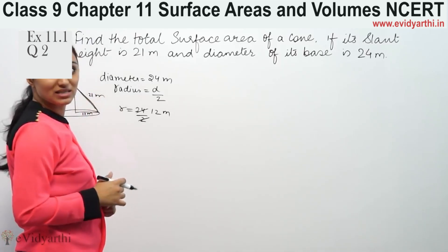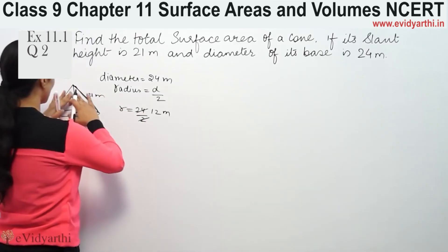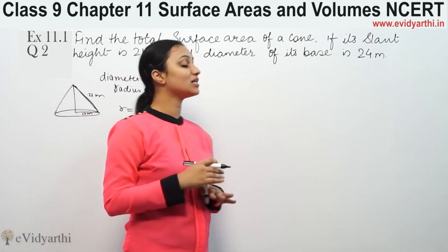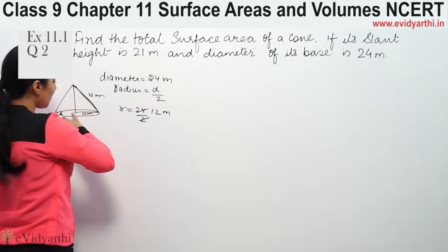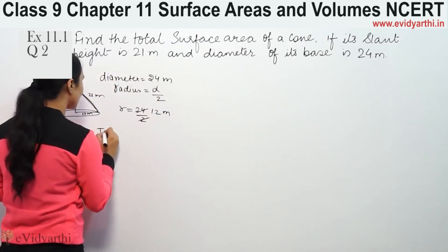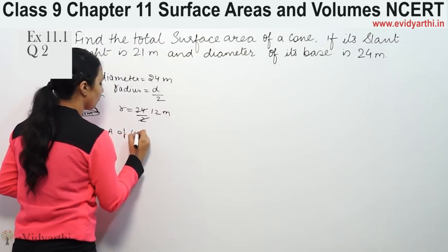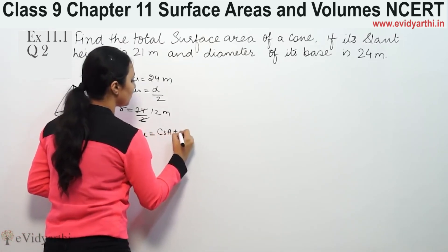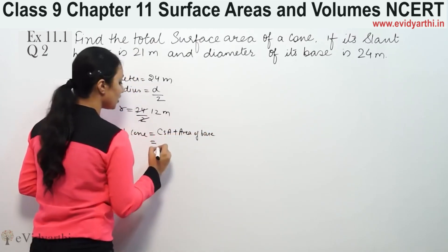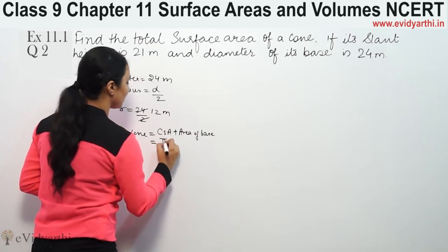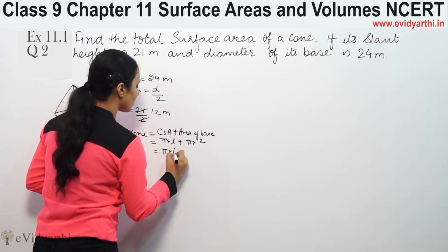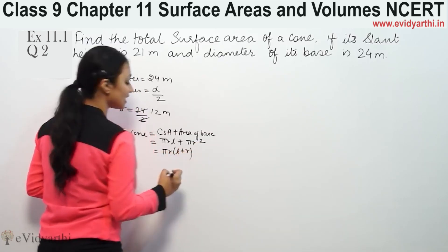Now we need to find its total surface area. Total surface area means the upper curved triangular portion of the cone plus its base — both are included. So total surface area (TSA) of a cone equals curved surface area plus area of base. The formula becomes: pi r l plus pi r squared, which simplifies to pi r common, giving pi r into (l plus r).